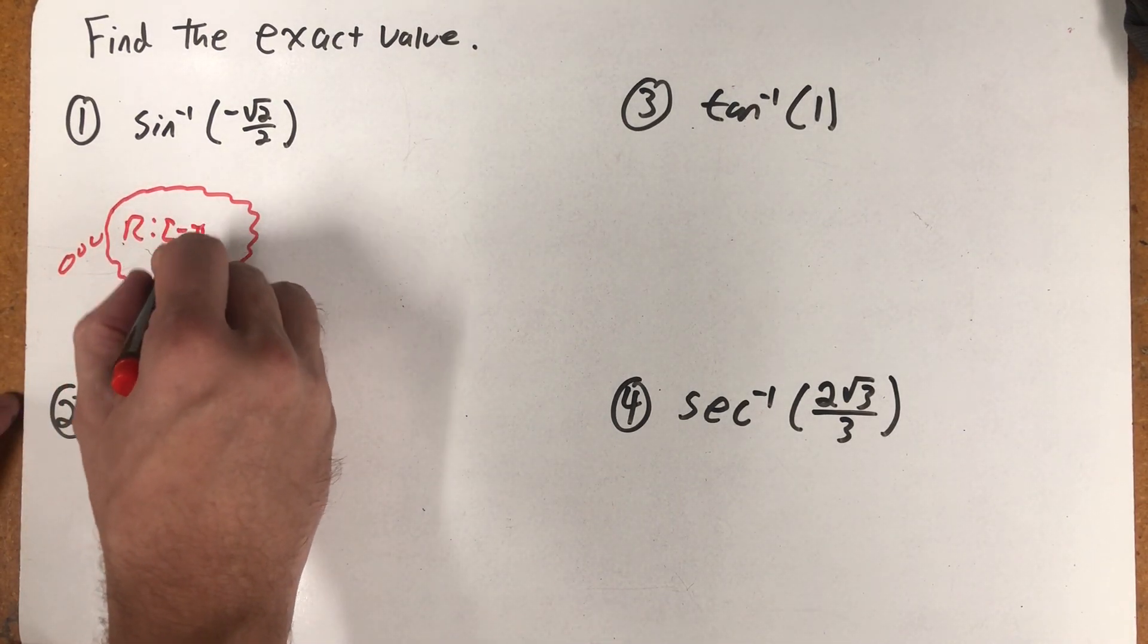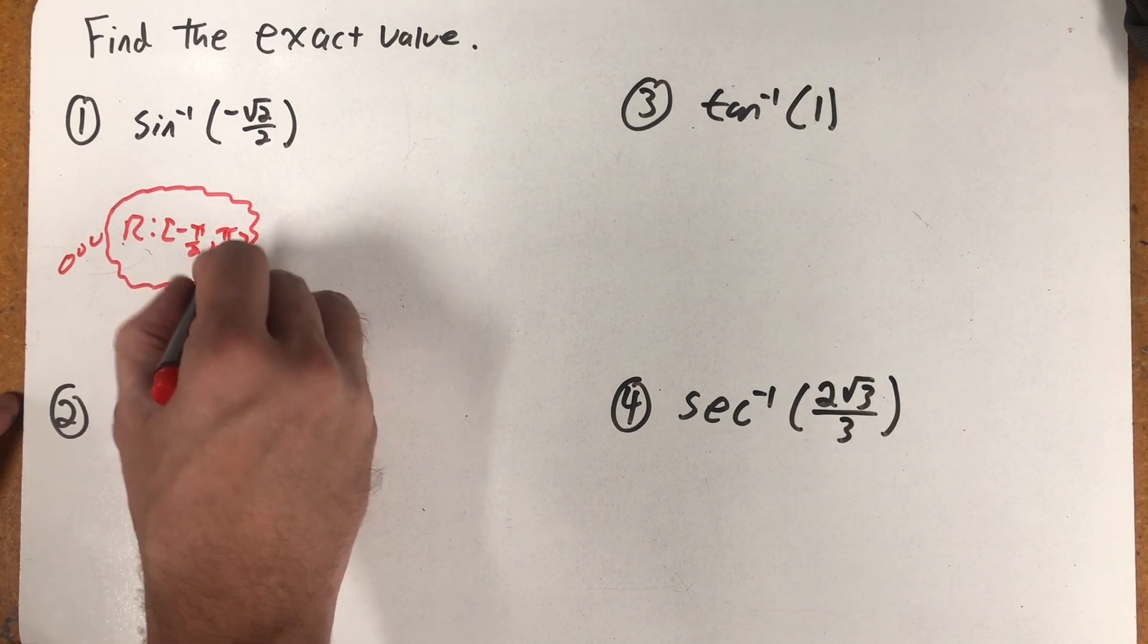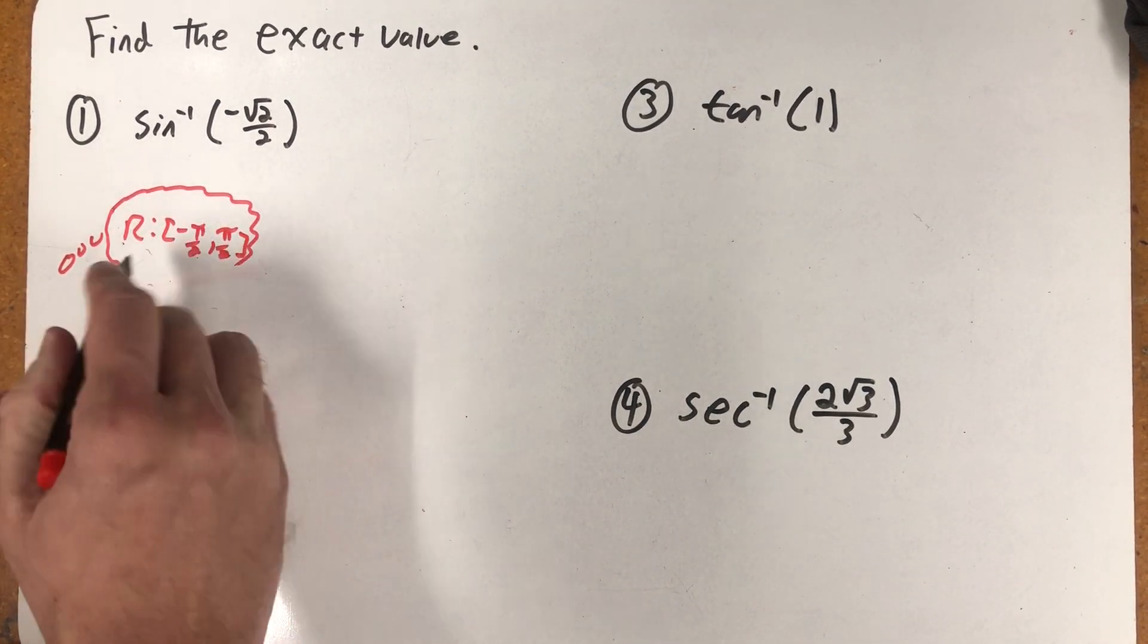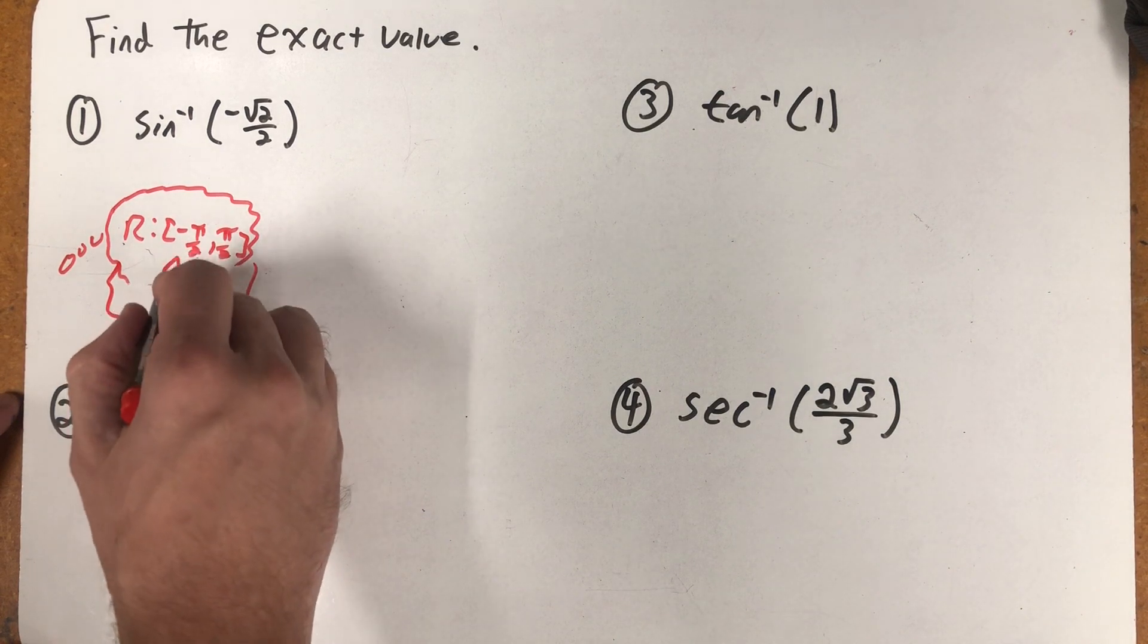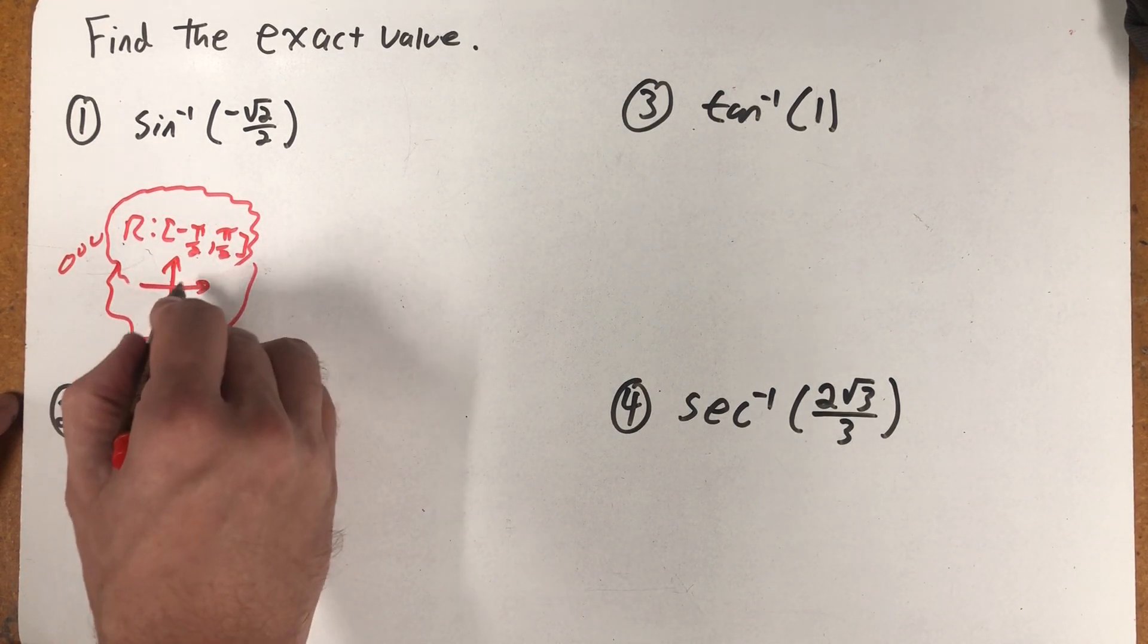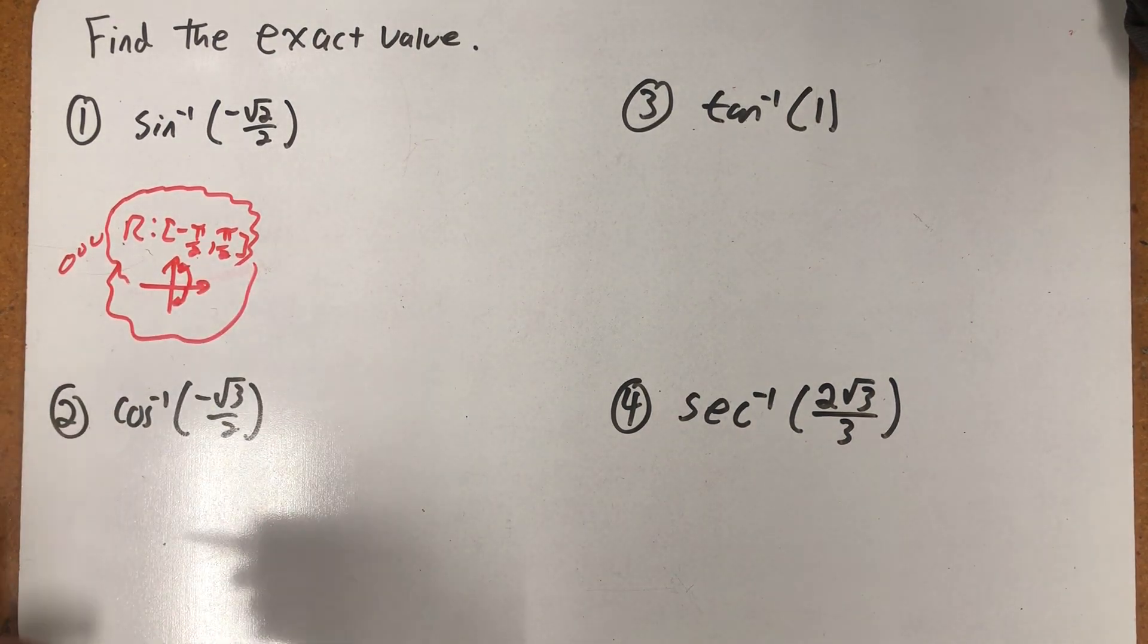Inverse sine can only tell me angles between minus pi halves and positive pi halves. And the way I like to think about that is inverse sine can tell me negative angles in quadrant four or positive angles in quadrant one.